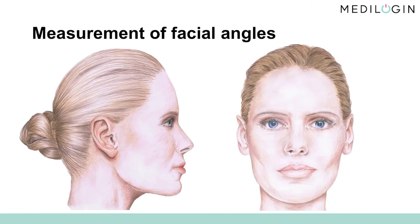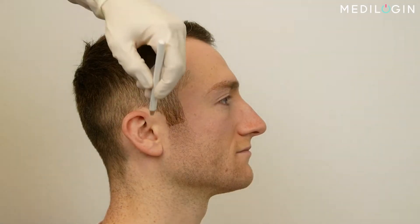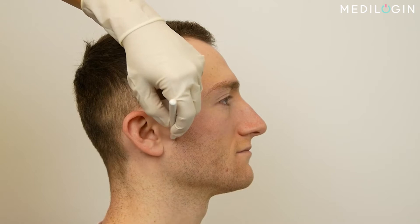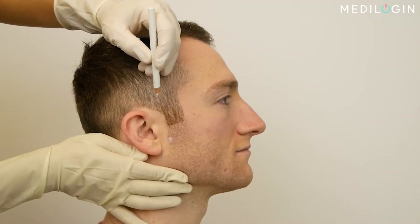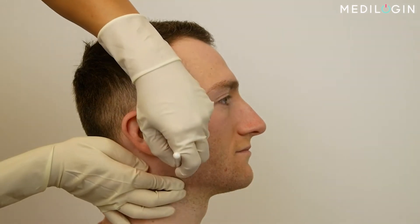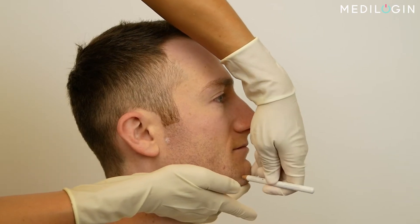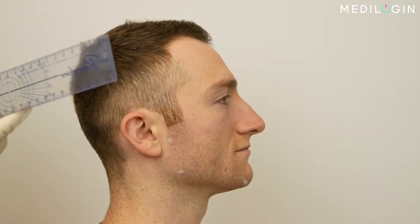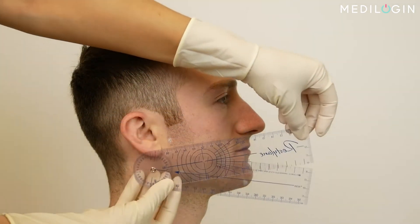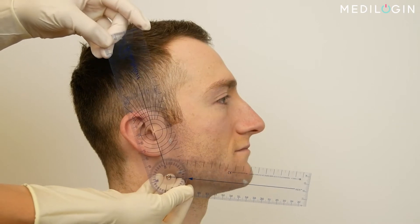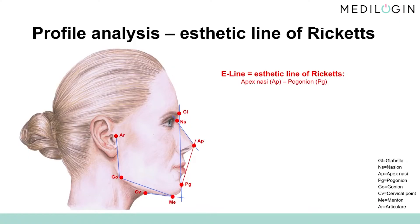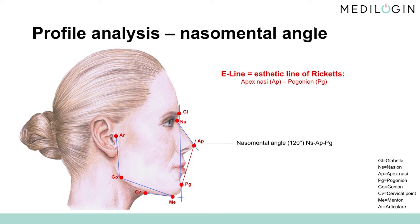In order to accurately measure the angles of the face, you'll need a goniometer, as well as a frontal and profile view of the head. The line between the nasion and the tip of the nose in relation to the pogonion creates another facial angle, the nasomental angle, which should be about 120 degrees.